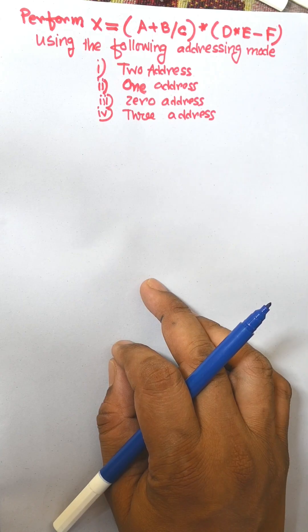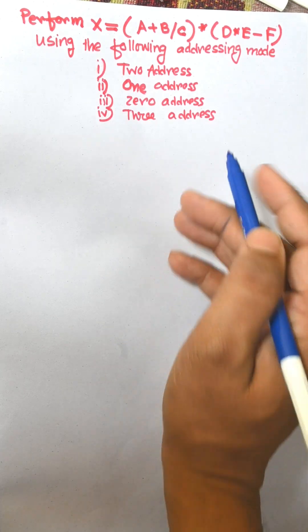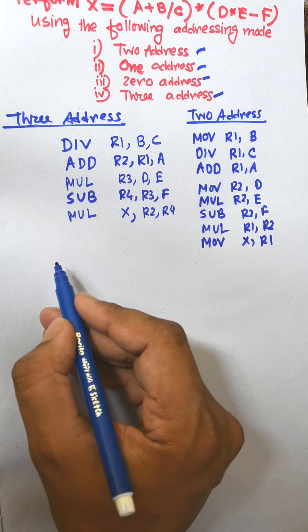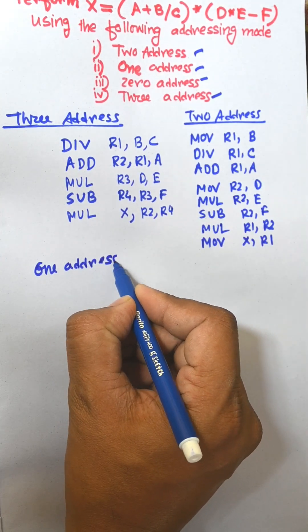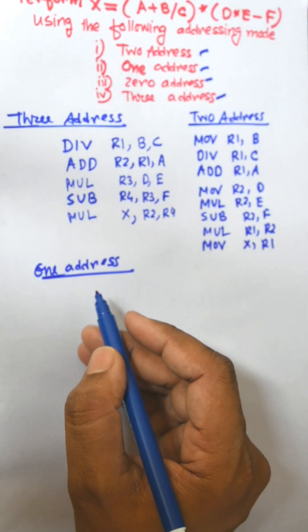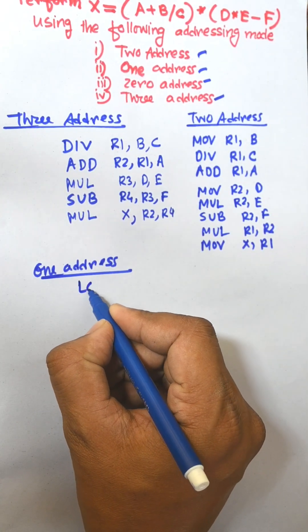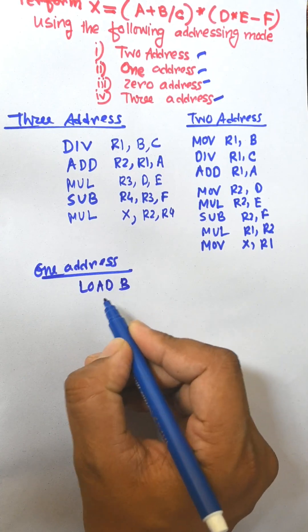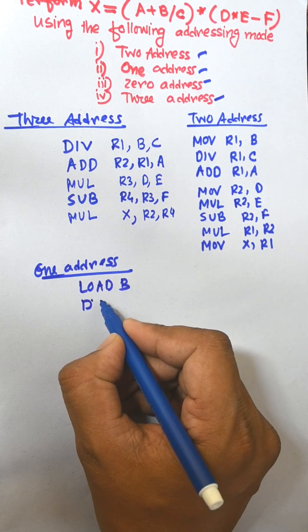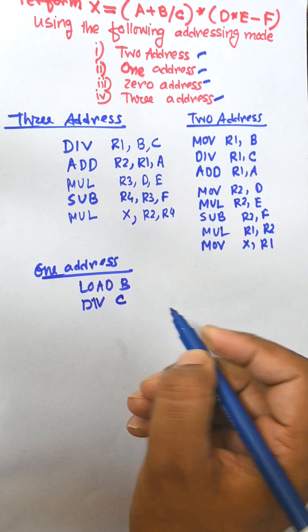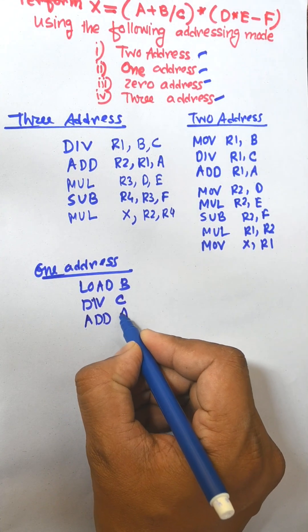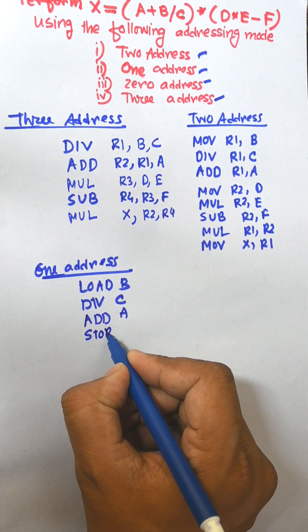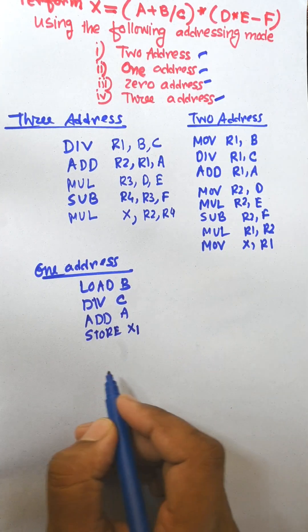In this video, I am going to convert the following expression into three-address instruction format, one-address instruction format using load and store instructions. That is: load B, divide by C, add the result to A, and the final result of this bracket is transferred to x1.